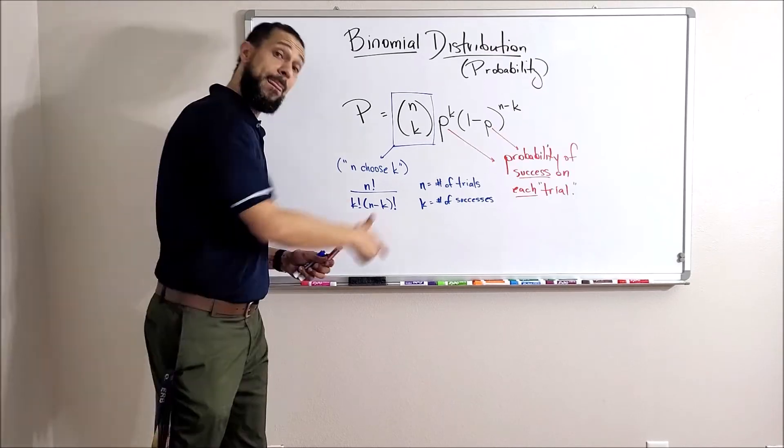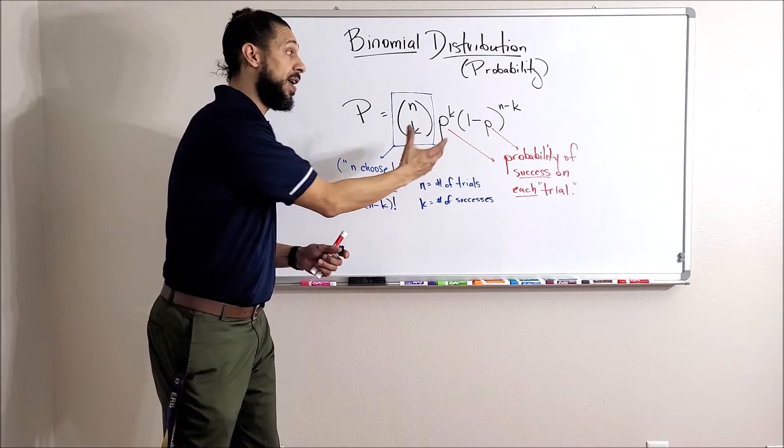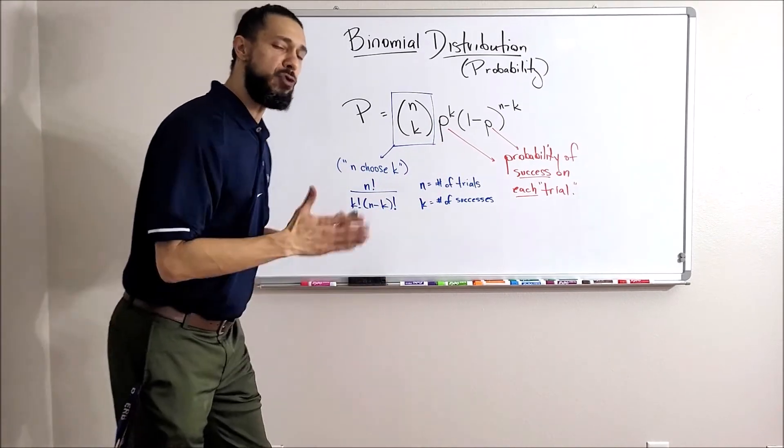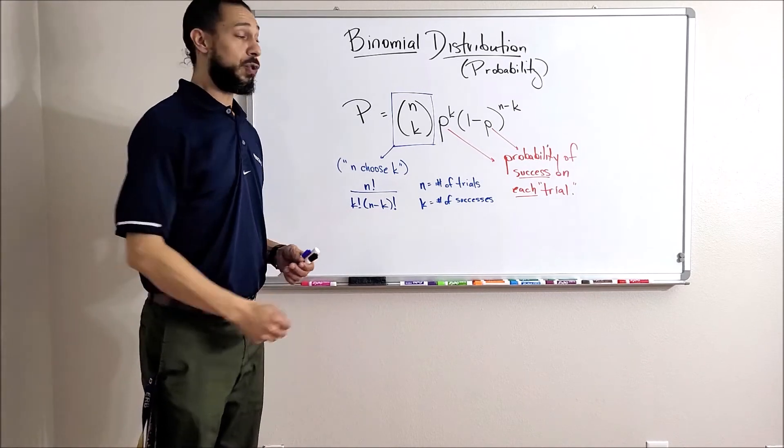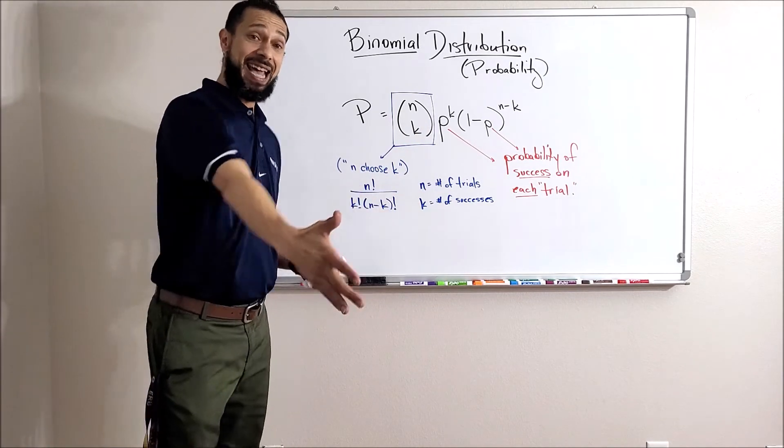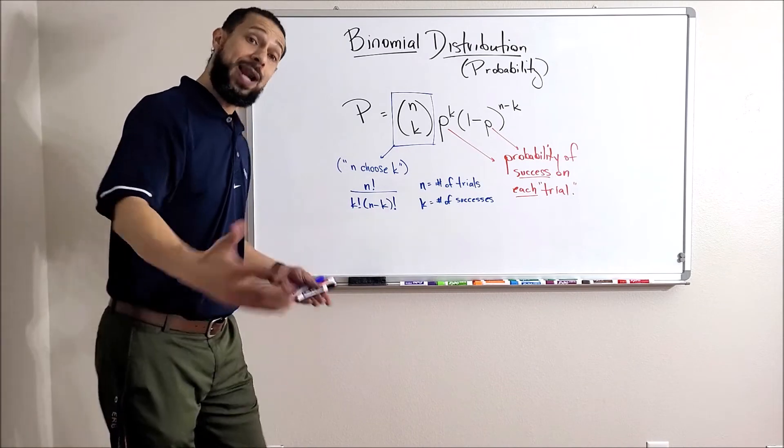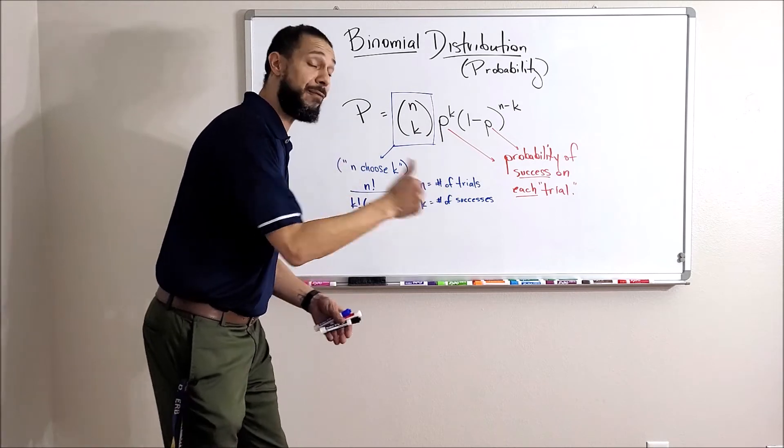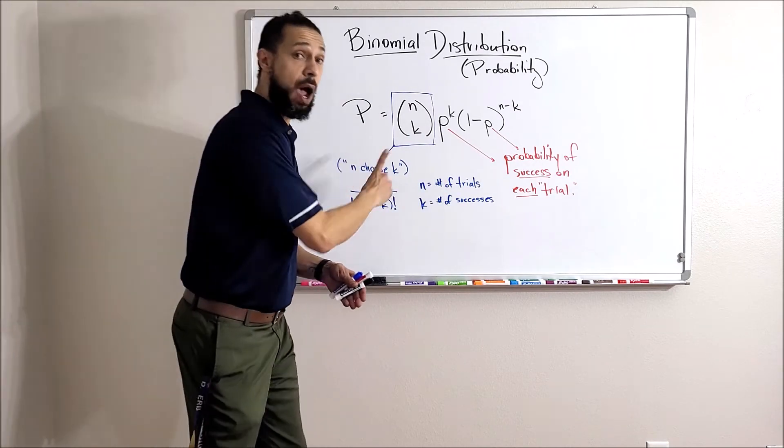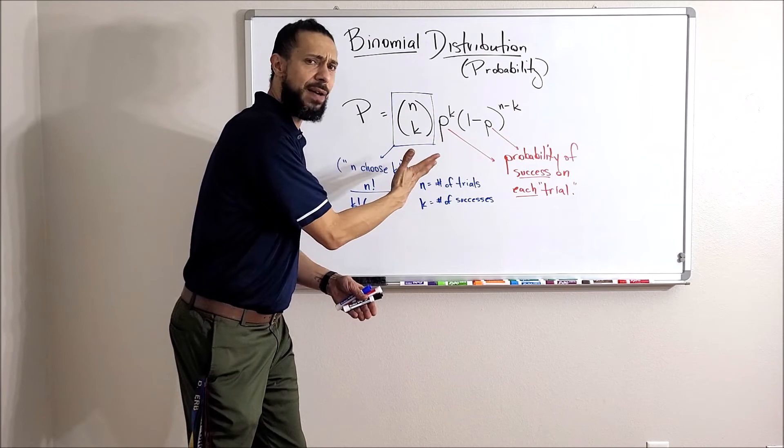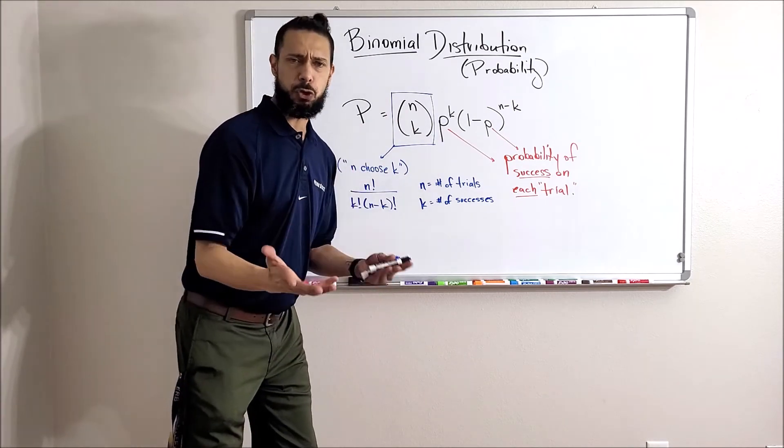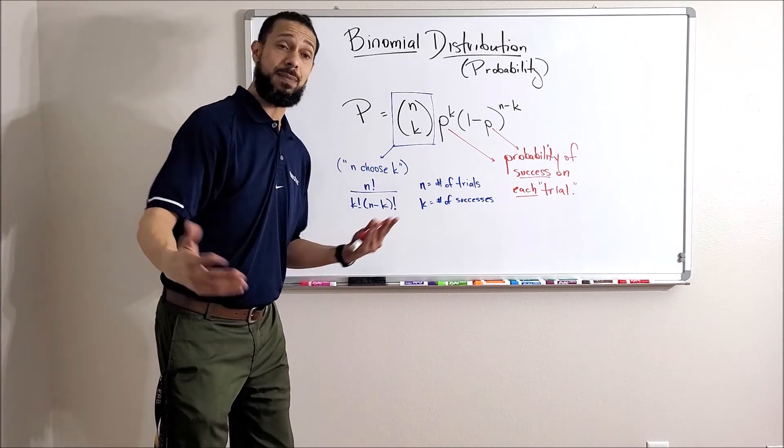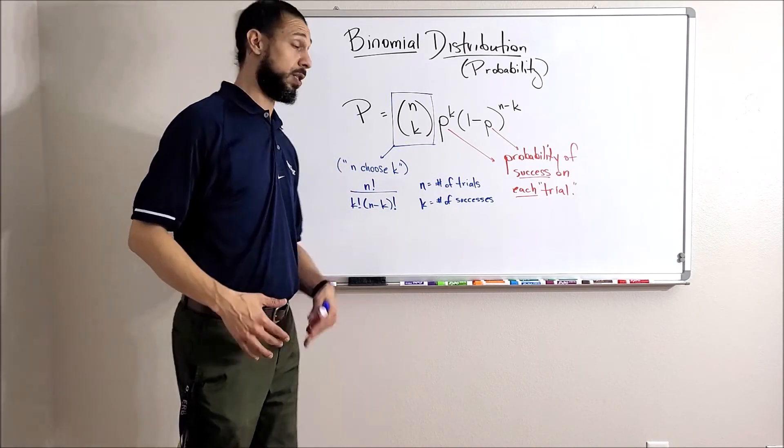This p, both of those lowercase p's, is the probability of success on each trial. Every time you do the thing, what's the probability of success? If I'm flipping a coin and my success is heads, that p would be 0.5 or one half, because there's a 50% chance or 1 out of 2 odds I'm going to get heads every time I flip. Remember, that's got to be the same each time. It doesn't have to be 0.5—let's say I'm shooting free throws and I'm a 70% free throw shooter. My chance of success on every free throw is 70%.